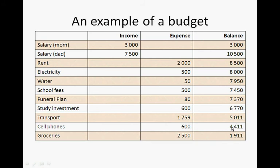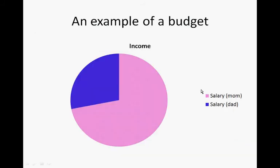Minus cell phones, we end up with 4,411 rand. And we minus groceries — we subtract 2,500 — and we end up with 1,911 rand. So if this family subtracts all their expenses from the income, they have an amount of 1,911 rand which they can save every single month.